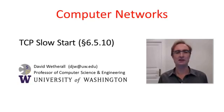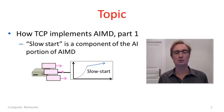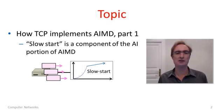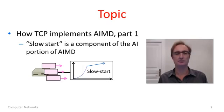Good day, viewers. In this segment I'll talk about TCP slow start. Recall that we're trying to get TCP to implement an AIMD control law, because this will give us a good allocation that's efficient and fair. Slow start is one of the mechanisms that TCP uses as part of its additive increase mechanism.